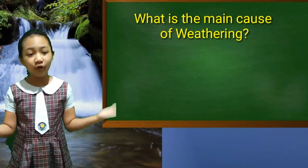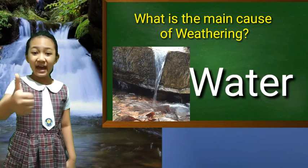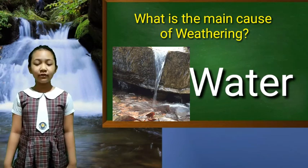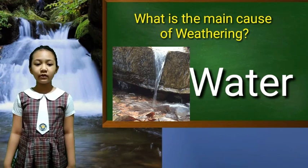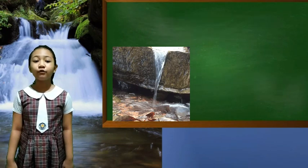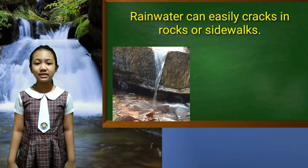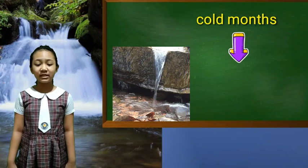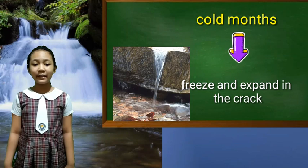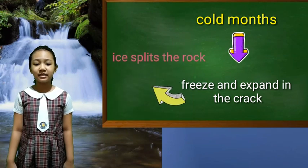Do you know what is the main cause of weathering? Water is often the main cause of weathering, either as rain or ice. Rainwater can easily enter cracks in rocks or sidewalks. If this happens during cold months, the water may freeze and expand in the rock, working as a wedge as the ice meets the rock.